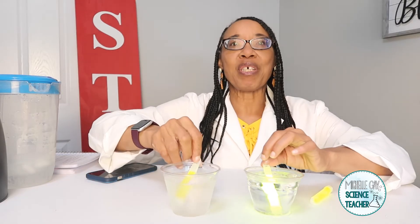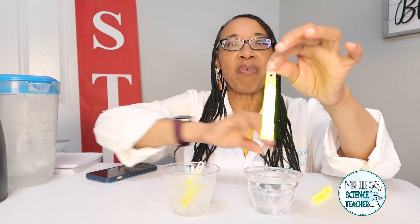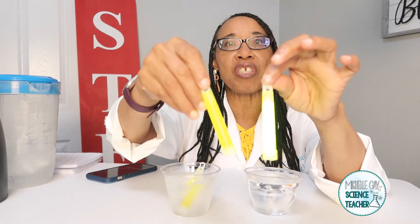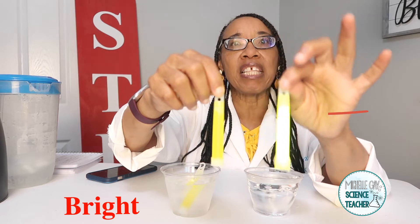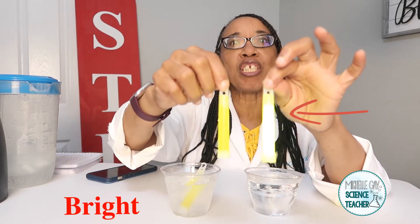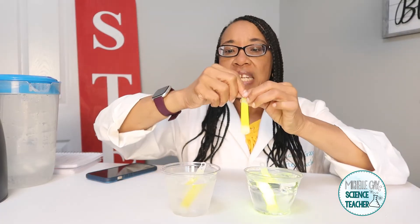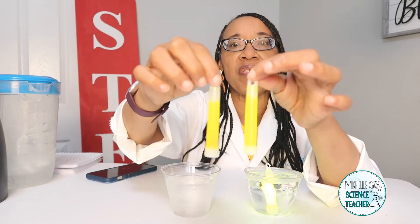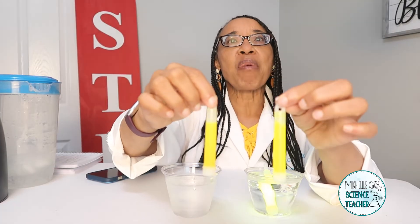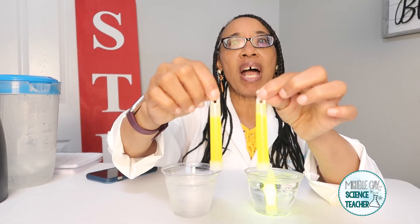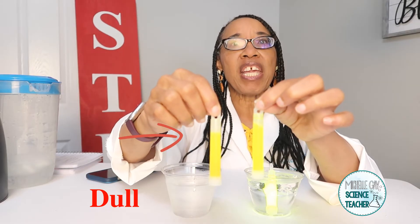Alright, let's pull them out. Let's look first at our hot water glow stick and compare it to the one we didn't put in water — notice that this glow stick is glowing much brighter. Then let's take the one out of the cold water. The one in the cold water became less bright — it's not even bright. The color just sort of dulled out. Why do you think that occurred?